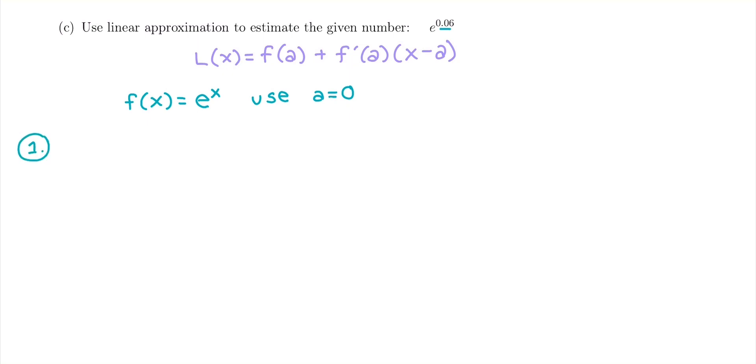So we're going to plug into our linear approximation formula. We're going to start by figuring out what f of a is. So f of e to the 0, f of 0 is just going to be 1.